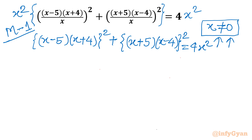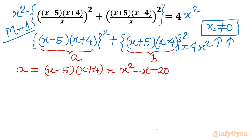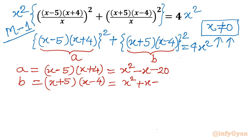Now I will use substitution. I will consider the first bracket as 'a' and the second bracket as 'b'. Here, a is (x minus 5)(x plus 4). Expanding: x squared minus x minus 20. And b is (x plus 5)(x minus 4). Expanding: x squared plus x minus 20.